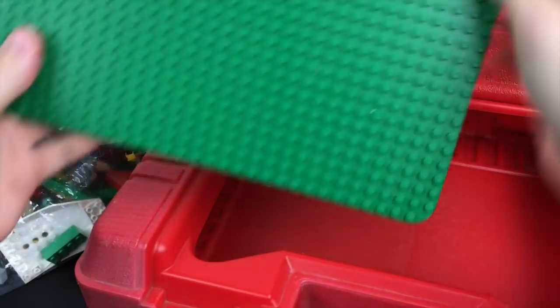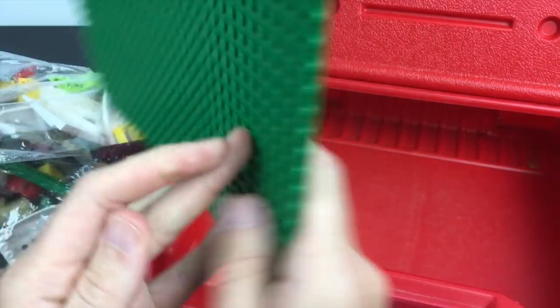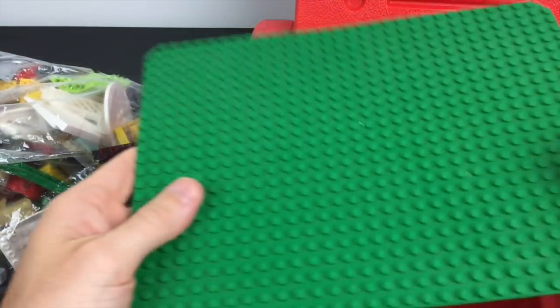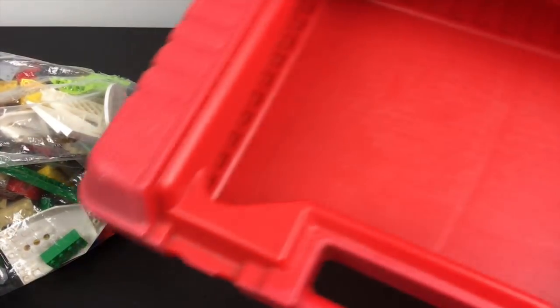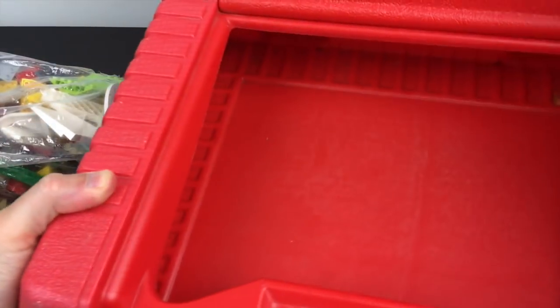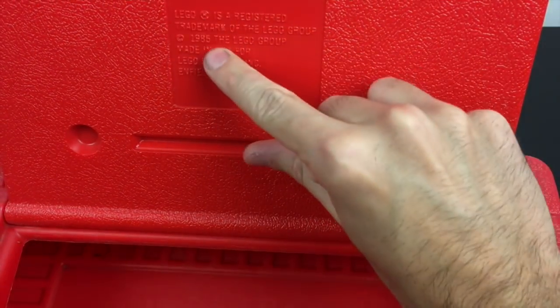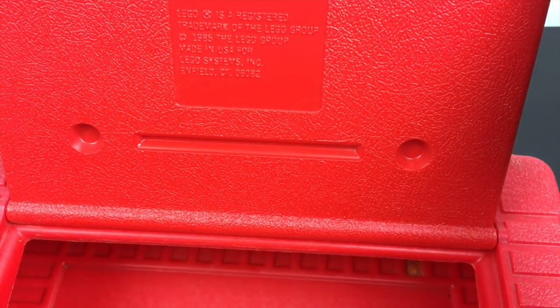So there's the bag. Here is the base plate. Pretty decent size one, fairly clean too. Although I am going to be cleaning all these pieces. So there's the end of the suitcase, nothing else inside there. And I'm wondering what the value of this is. Does anyone have any information on this? This says 1985, 1985 Lego groove.